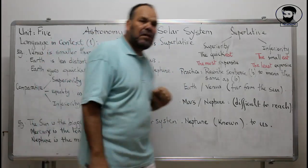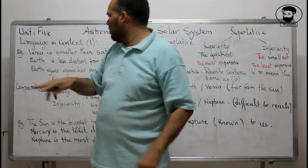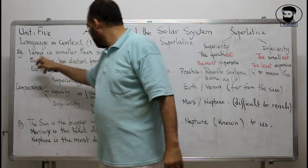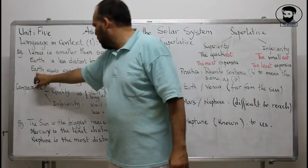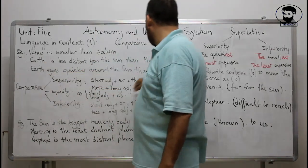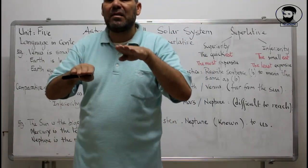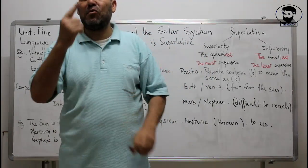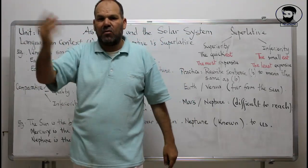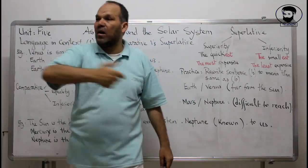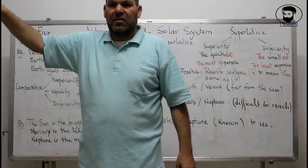The comparative is used when comparing two things — for example: Venus and Saturn, Earth and Mars, Earth and Neptune. The superlative works the same way as the comparative but involves one thing compared with more than two others — one with three, one with four, one with all. So you compare one thing with many other things.